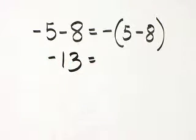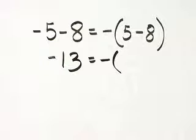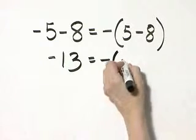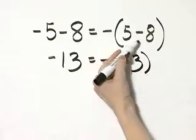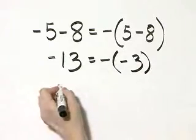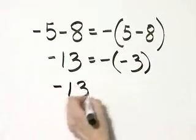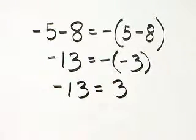On the right side, this would be the opposite of, and what is 5 minus 8? 5 minus 8 is negative 3. You can think of this as 5 plus negative 8. Either way, it's negative 3. So on the left side, I have negative 13. The right side, I have a positive 3, the opposite of negative 3.